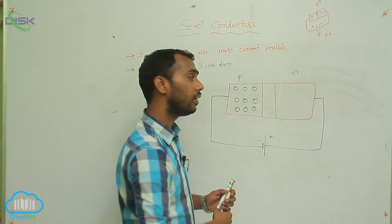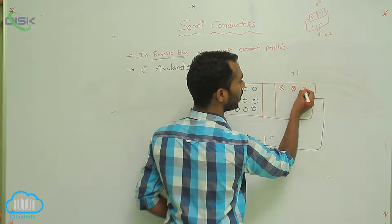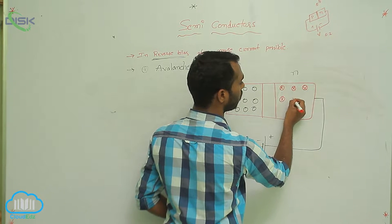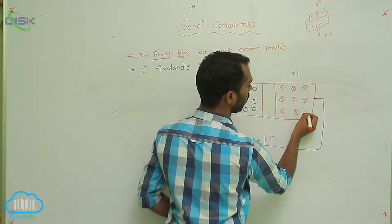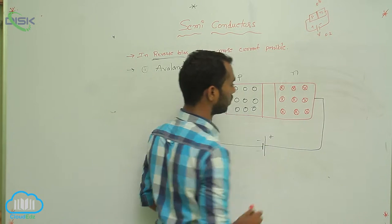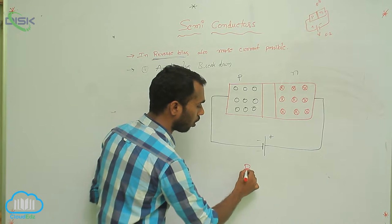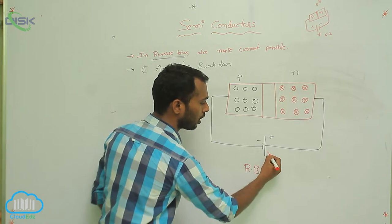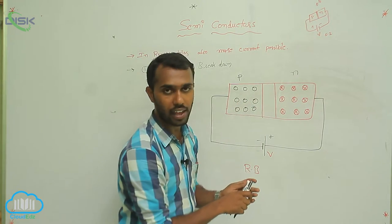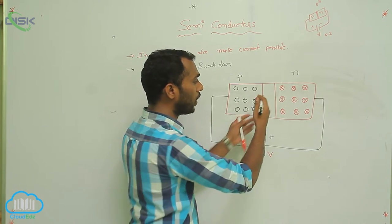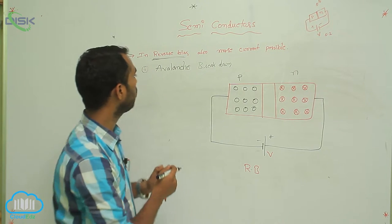N means negative — majority charge carriers are electrons. Is this forward bias or reverse bias? It is reverse bias. In reverse bias, what is the depletion layer width? Depletion layer width is more.